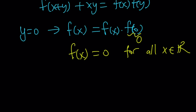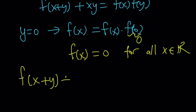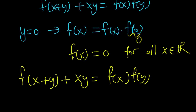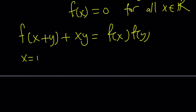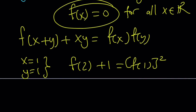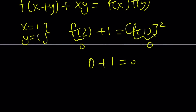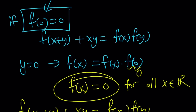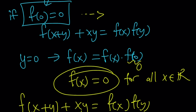But here's the problem. If f of x equals 0 for all x, let's use x equals 1 and y equals 1 in the original equation. We get f of 2 plus 1 equals f of 1 squared. Since f of x is identically 0, f of 3 is 0 and f of 1 is 0, so we get 0 plus 1 equals 0, or 1 equals 0. That's nonsense — a contradiction. So assuming f of 0 equals 0 leads to a contradiction; therefore f of 0 does not equal 0.